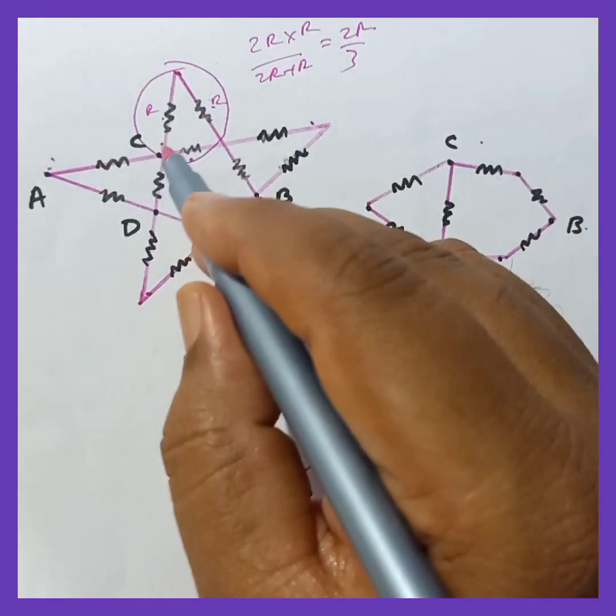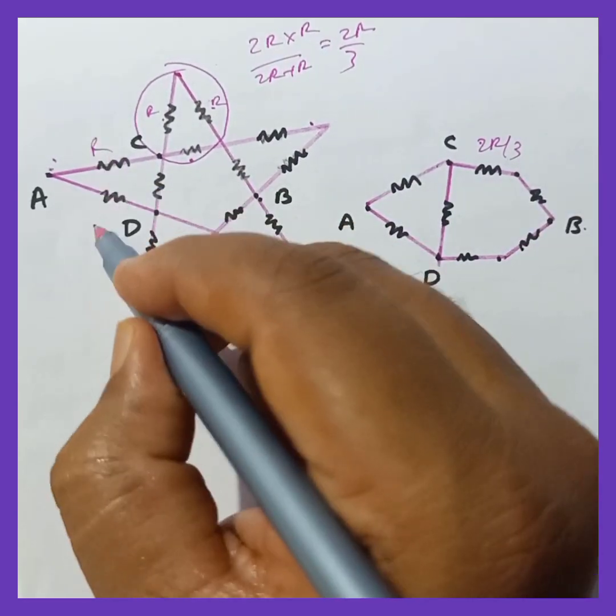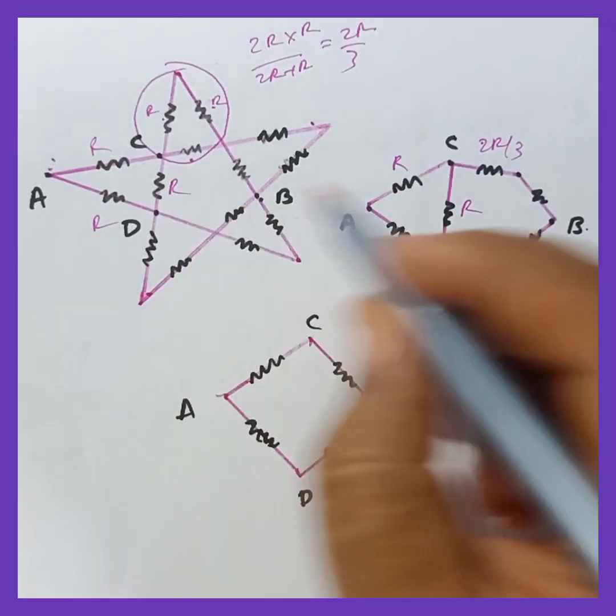Which I have drawn here and this is replacing this one that is taken as 2R by 3. This is R and this is R. I am writing here and here. The middle one is R which is here between C and D.